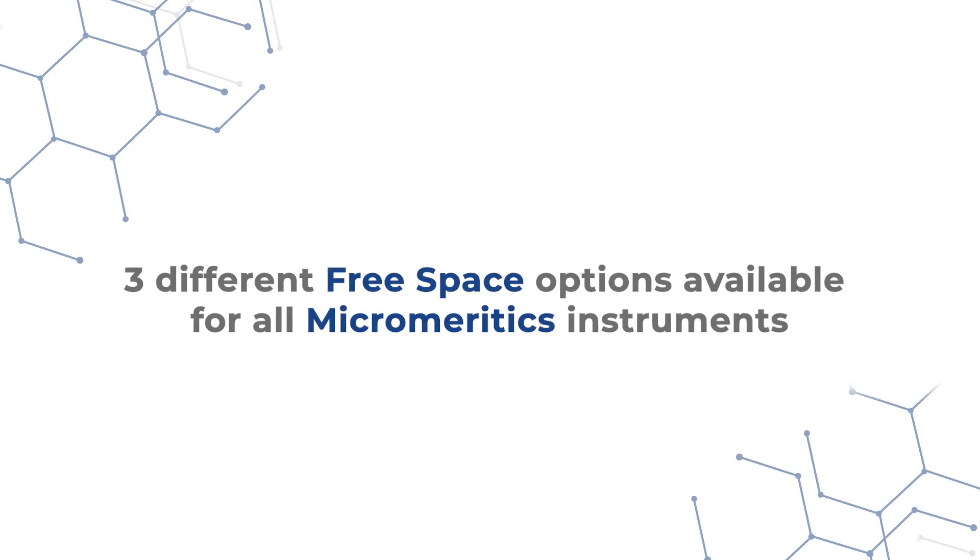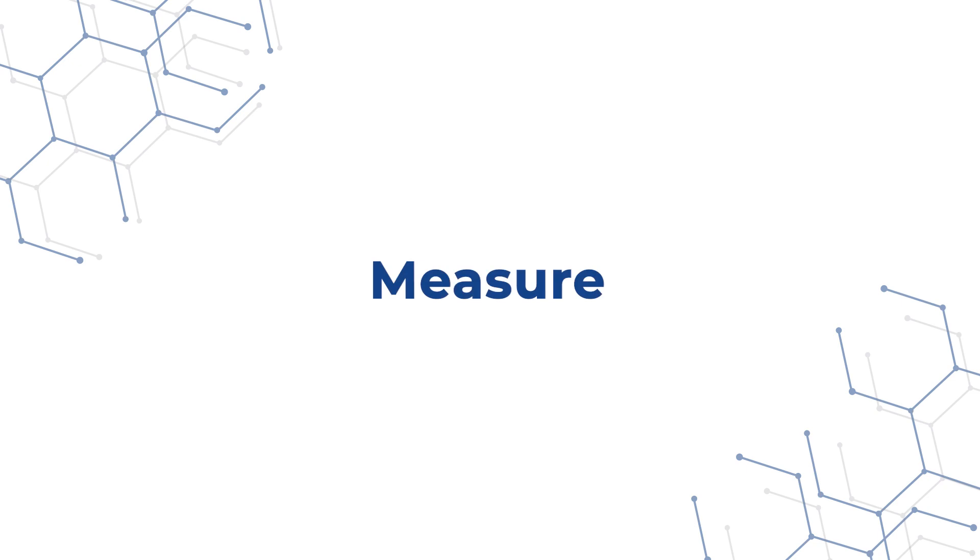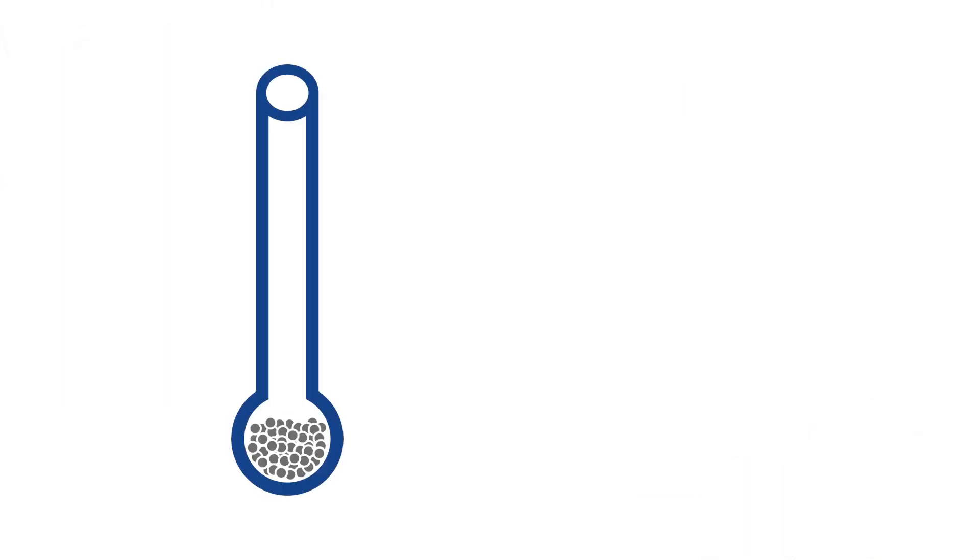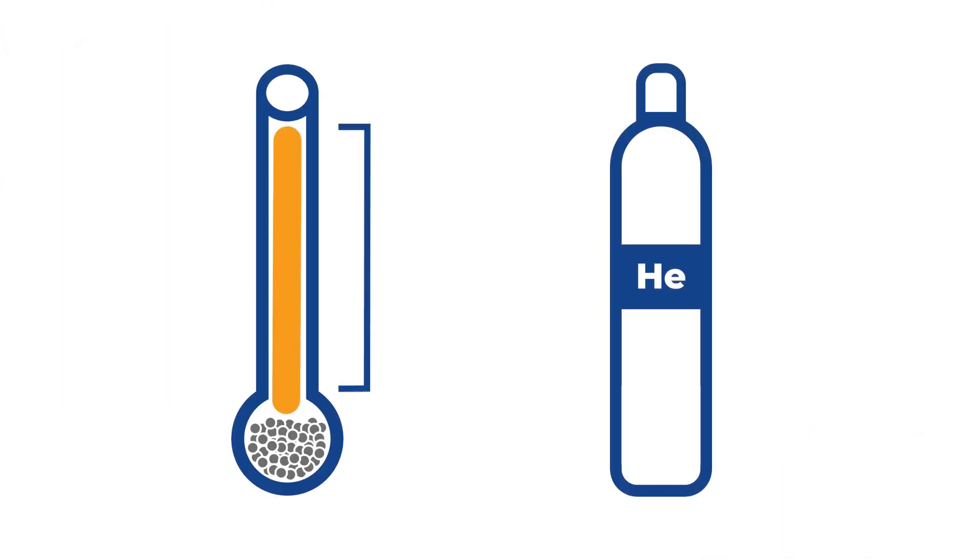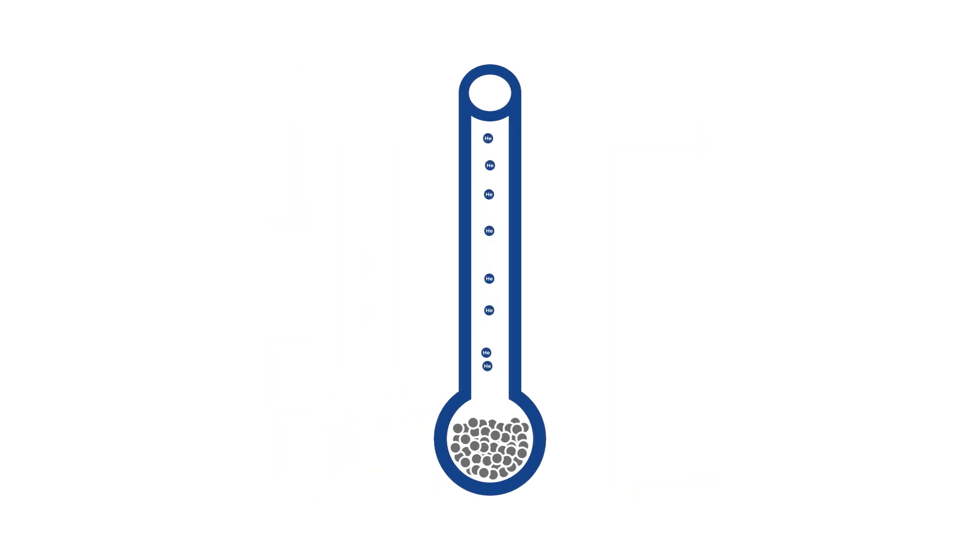There are three different free space options available for all Micromeretics instruments. The first one is measure. It measures the free space with helium before the analysis and gives the most accurate BET result. Helium is used to measure the free space due to its lack of interaction with most samples.